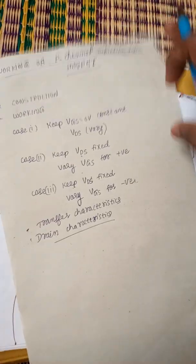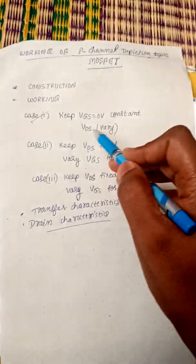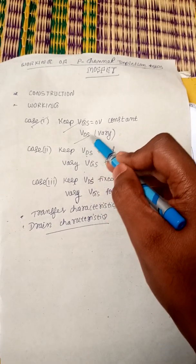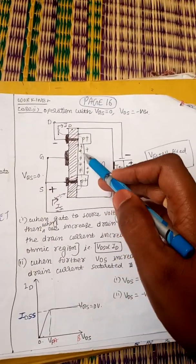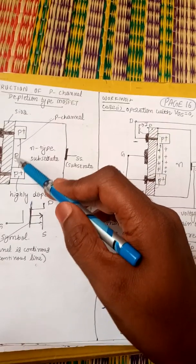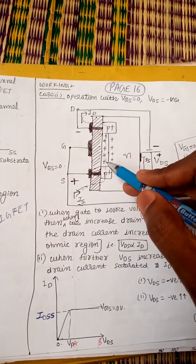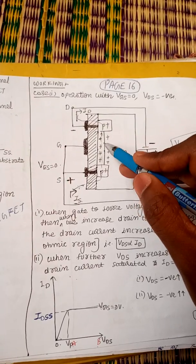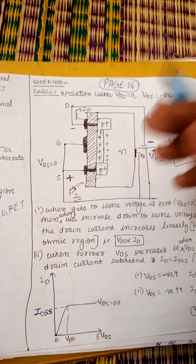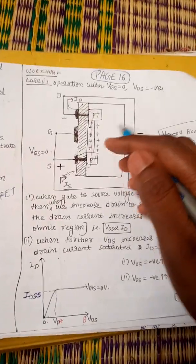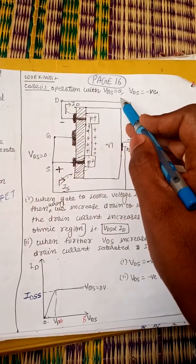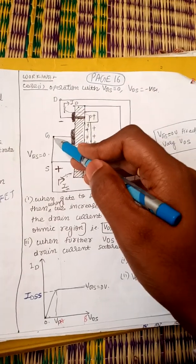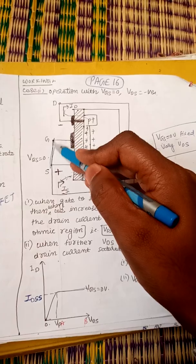Moving to the working — first case: keep Vgs equal to 0 volt constant and vary VDS. The channel is made up of P-type material, therefore the channel is replaced by holes, since P-type material is majorly made up of holes. To keep Vgs equal to 0 volts, you short circuit the gate to source terminal.